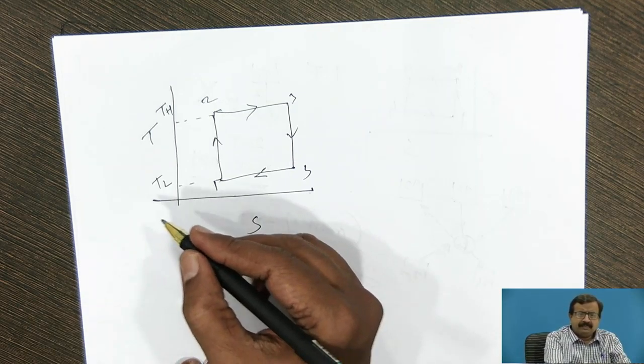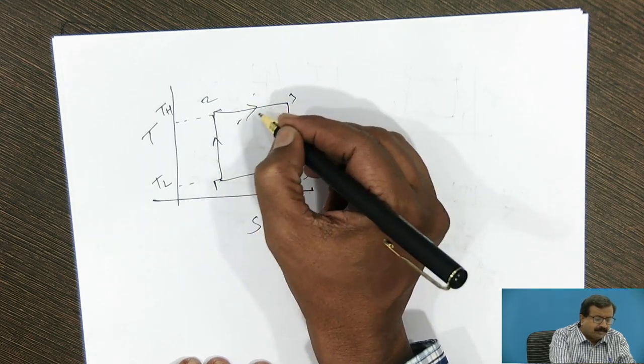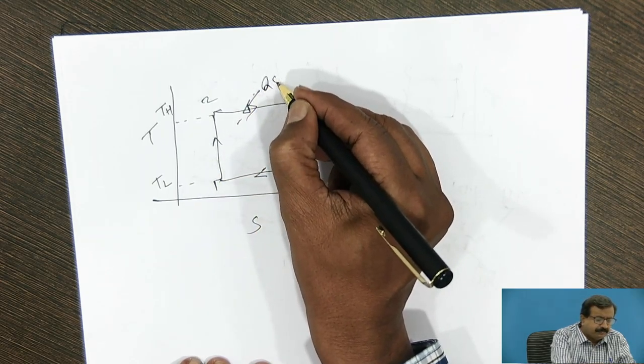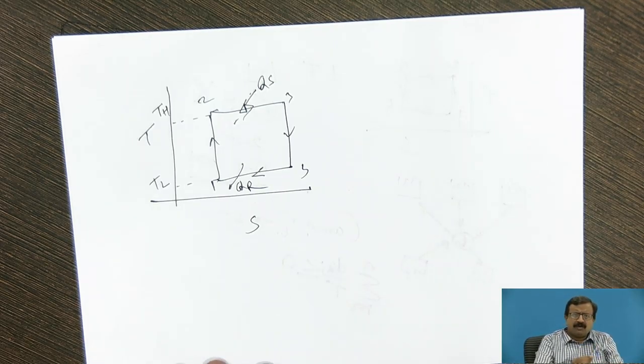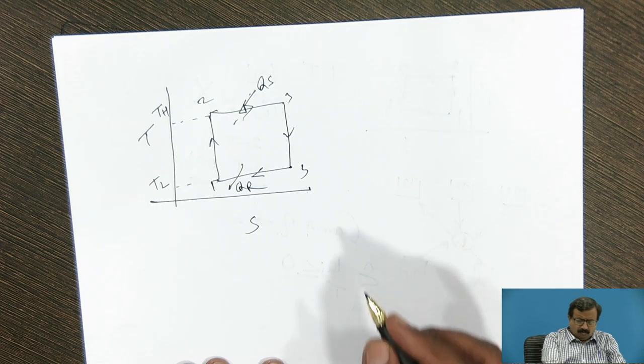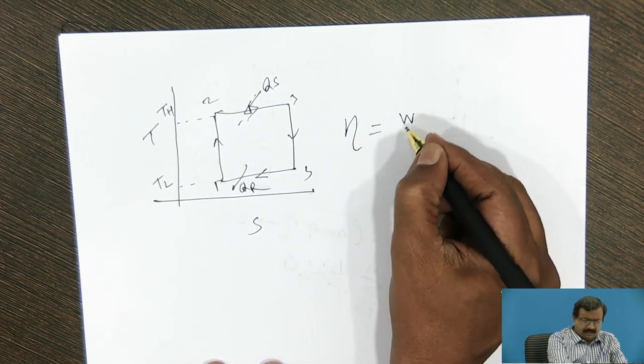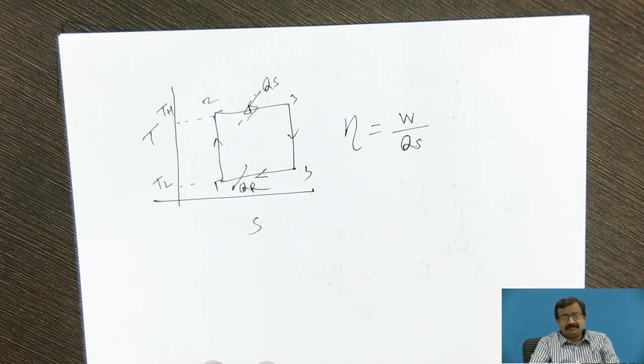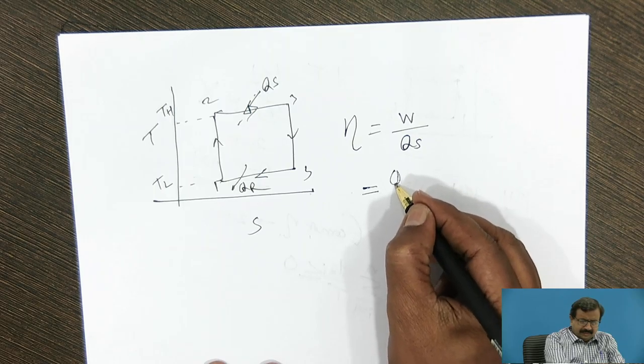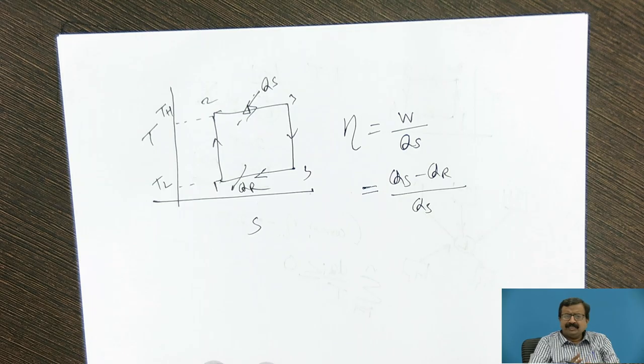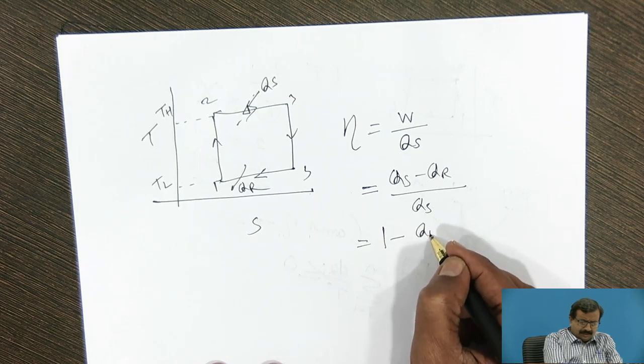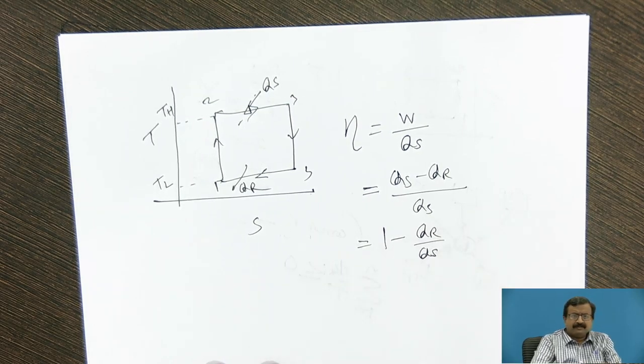This is the lowest temperature, this is the highest temperature. I know that this is the heat supplied to the engine, and this is the heat rejected. Now, what is the efficiency of an engine? It is the work done upon heat supplied. This is the classic definition. Now, what is work? It is the heat supplied minus heat rejected upon heat supplied. This will give me 1 minus Q rejected upon Q supplied.